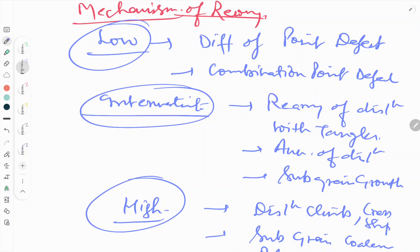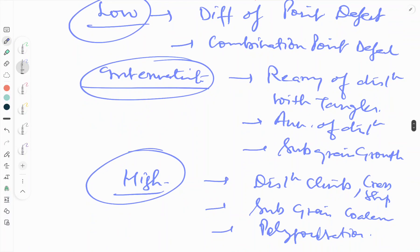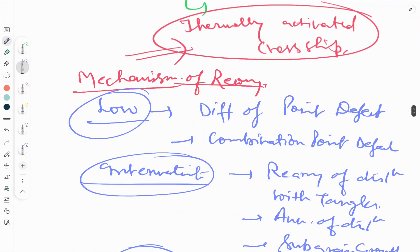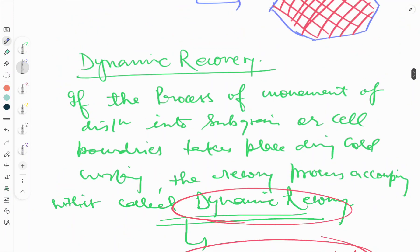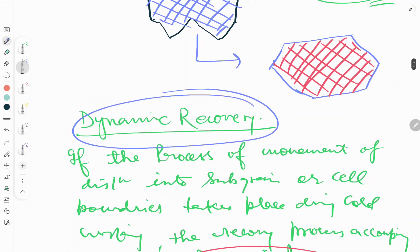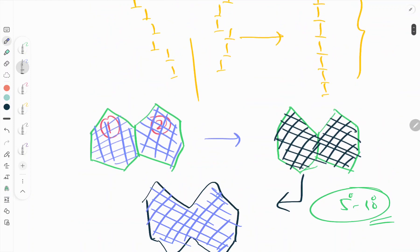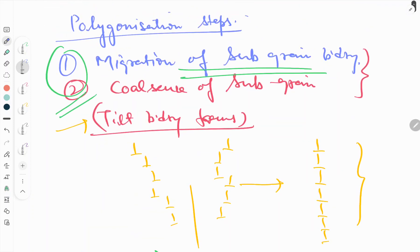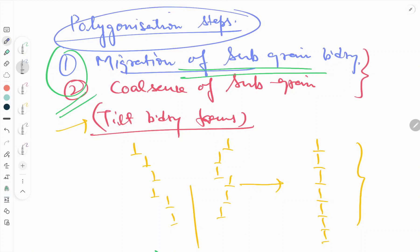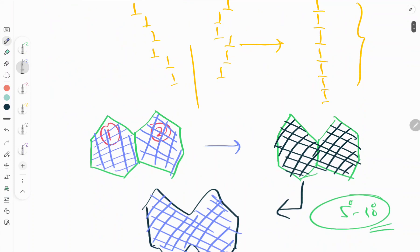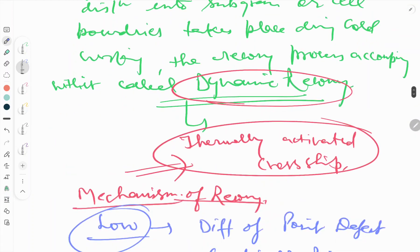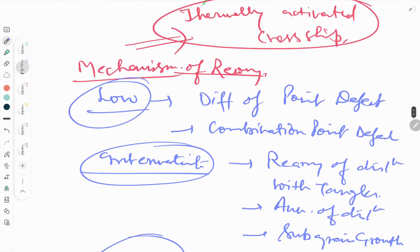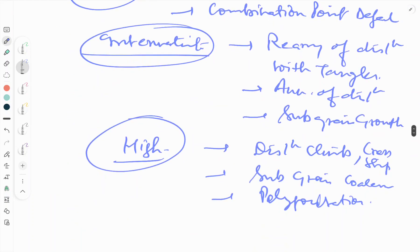In this video, up to here only. This is all about dynamic recovery and the polygonization steps — that is, migration of sub-grain boundaries and coalescence of sub-grains. Kindly stay connected and like, share, and subscribe to our YouTube channel. Thank you.